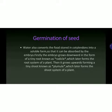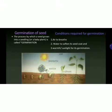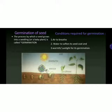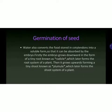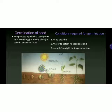The embryo first grows downward in the form of a tiny root known as the radicle. As you can see in the picture, a little root is coming out in the second step — that is known as the radicle. It goes into the soil first and gives rise to a root system. The root system spreads into the soil, and when the plant comes out of the ground and starts developing a shoot, the roots keep it upright. Then it grows upward forming a tiny shoot known as the plumule, which later forms the shoot system of the plant. You can see the radicle in the second step, and in the fourth step, the plumule comes out and gives rise to the shoot system.